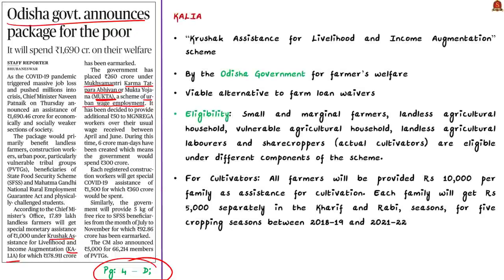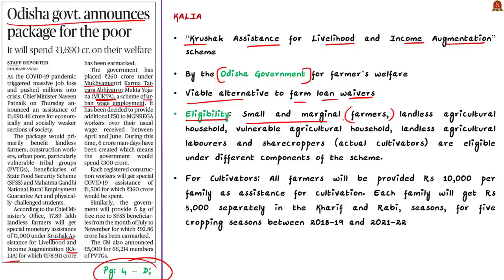KALIA stands for Krushak Assistance for Livelihood and Income Augmentation. It is a scheme by the Odisha government and is seen as a viable alternative for farm loan waivers because it provides a lot of income support to farmers. Those eligible include small and marginal farmers, landless agricultural households, vulnerable agricultural households, landless agricultural laborers, and sharecroppers.